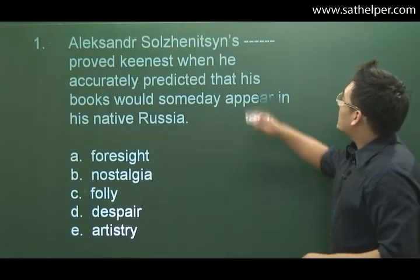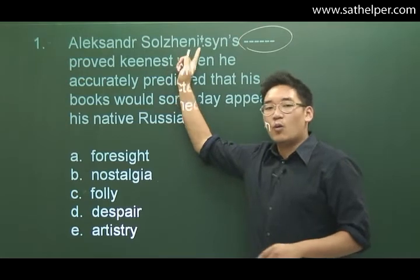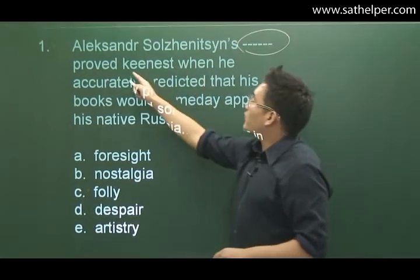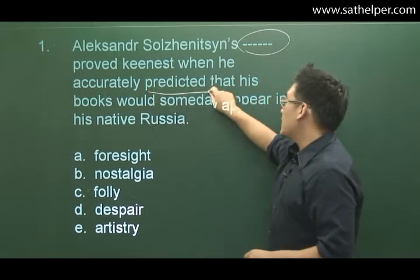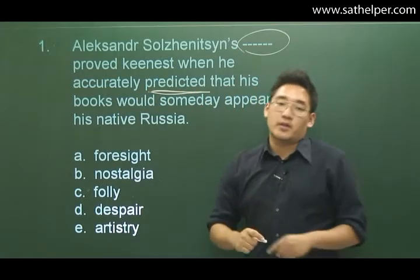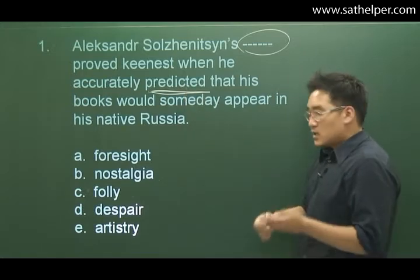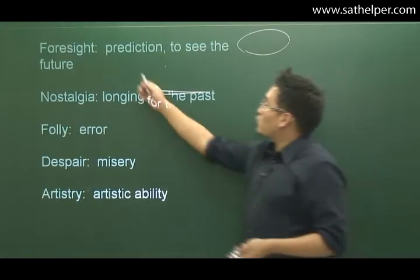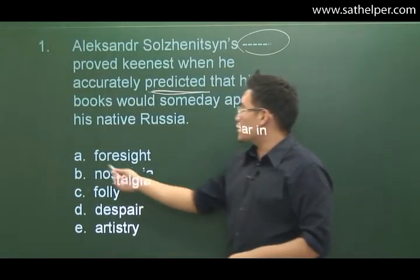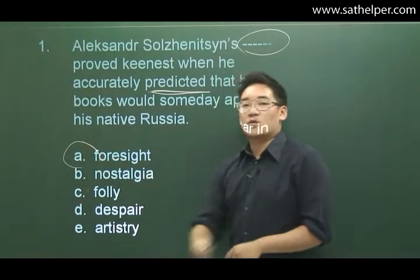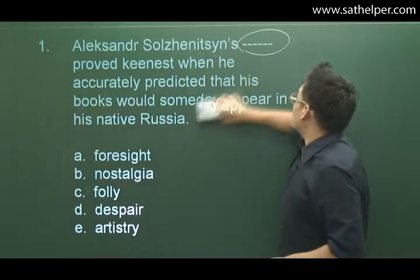If we go back to the question, we see that we're looking for some quality of Alexander Solzhenitsyn. This quality proved keenest — it proved sharpest — when he accurately predicted. Predicted is the key word here; that is his ability to predict something. So if we look back at those words, foresight means prediction. The best answer choice here is going to be A, foresight.